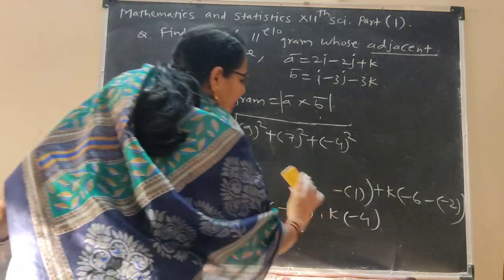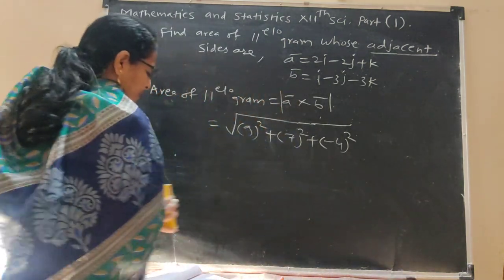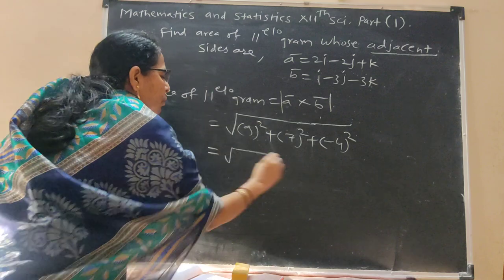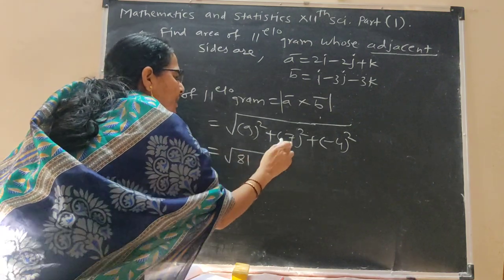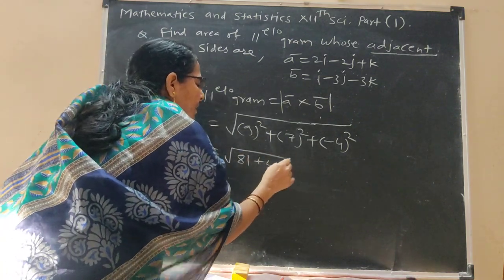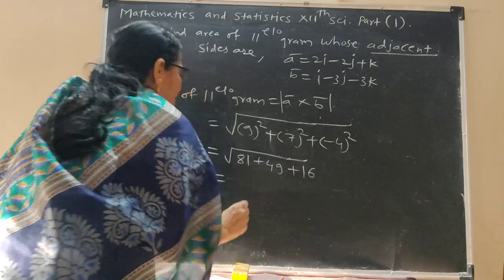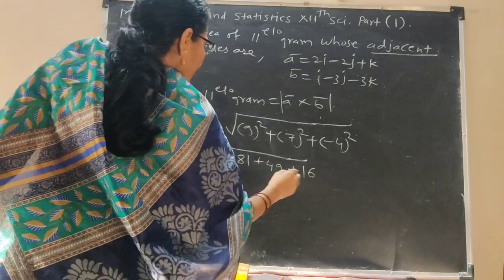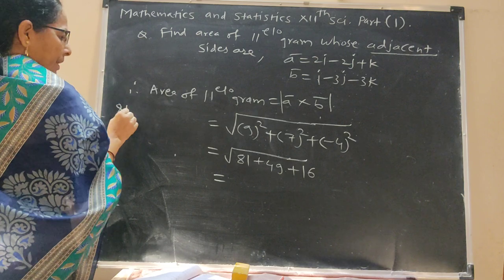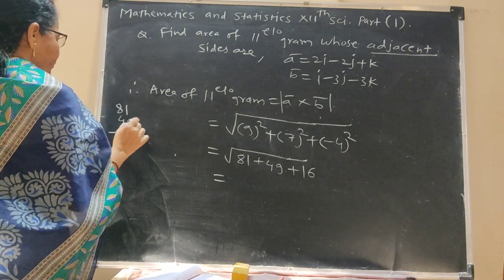Now this is under root. This is 81, this is 49. Square of minus 4 is 16. So addition of this: 81, 49.